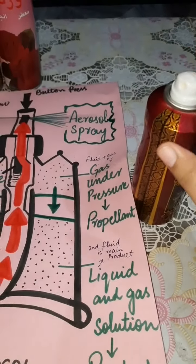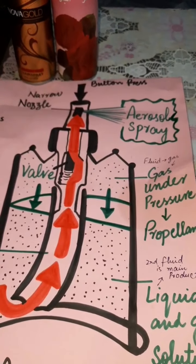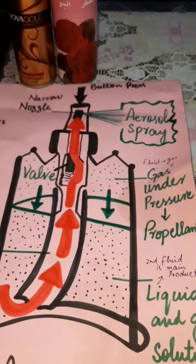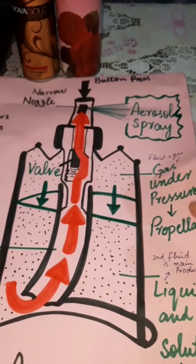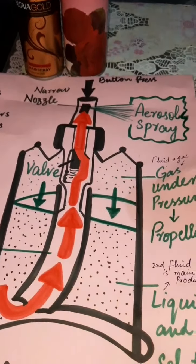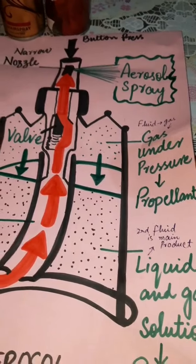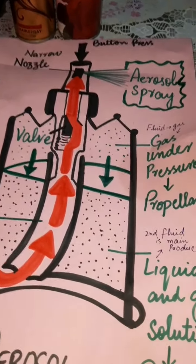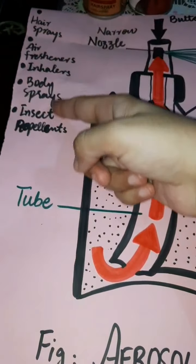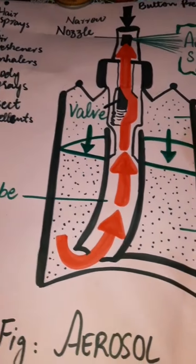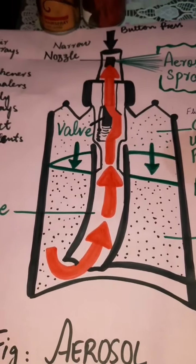Now it is clear that aerosol sprays contain two fluids. The first is the propellant, because it propels the liquid into the tube. The second fluid is the main product, which is basically a mixture of liquid or solid particles with air or gas. Aerosol sprays work on this basic main principle. Thanks for watching the video.